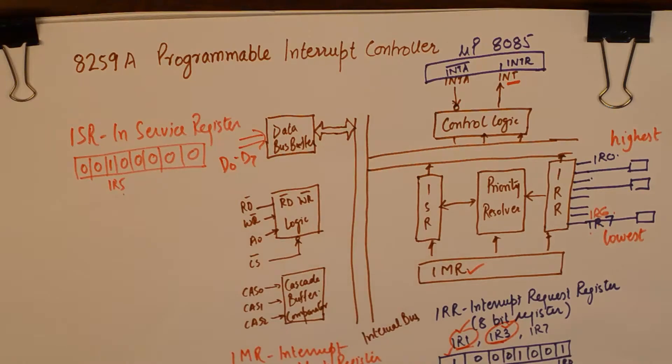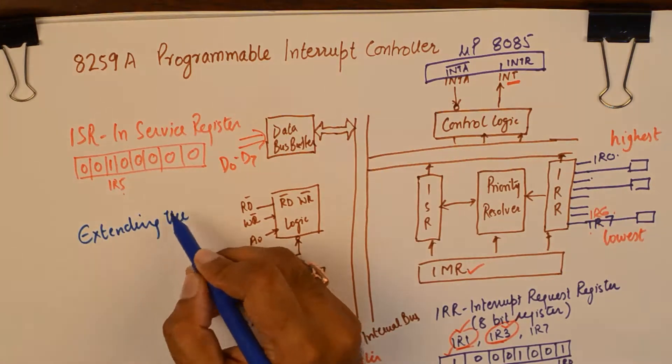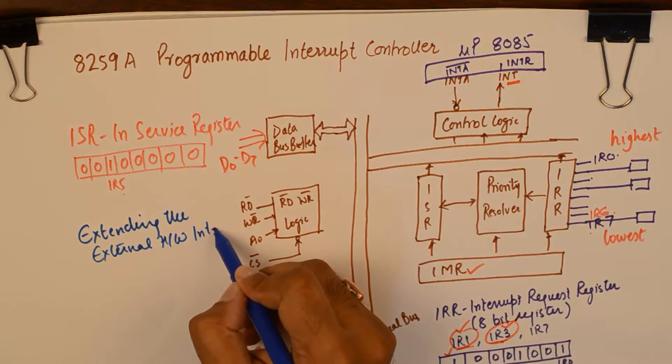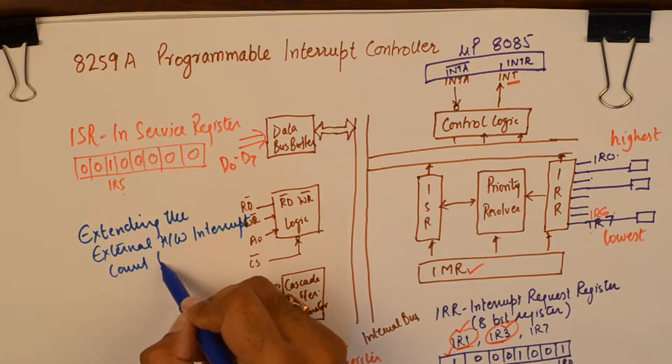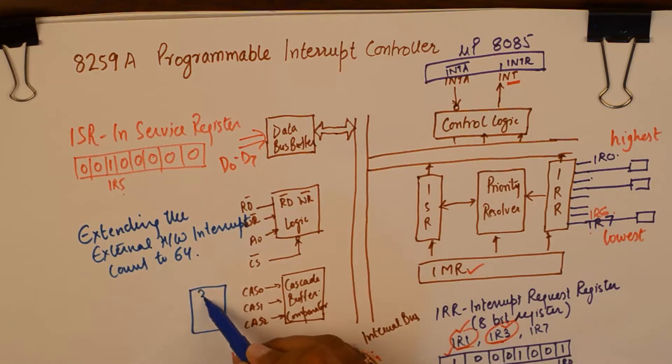Now one important point that we need to know about 8259 is that it has the capability of extending the external hardware interrupt count to 64 by cascading a lot of other 8259s. And that happens by connecting a 3 is to 8 decoder.